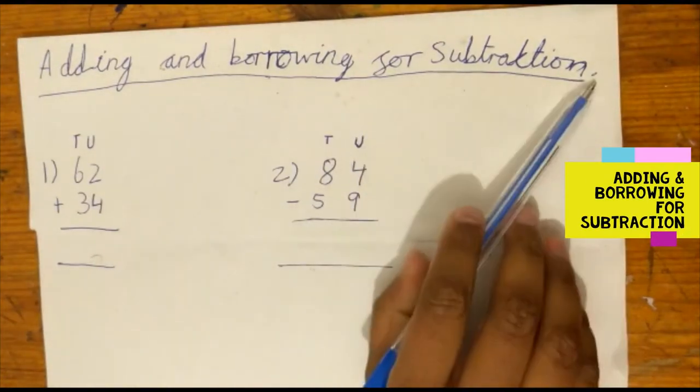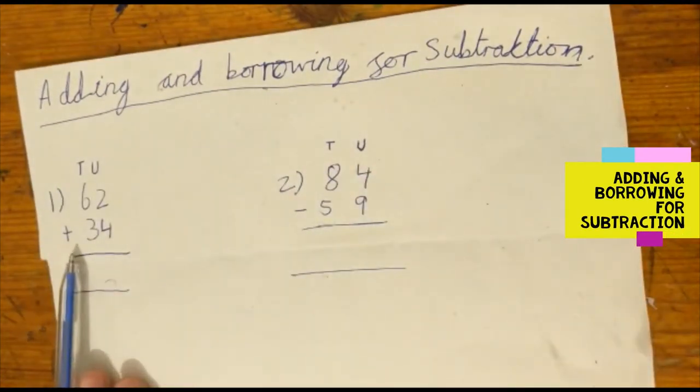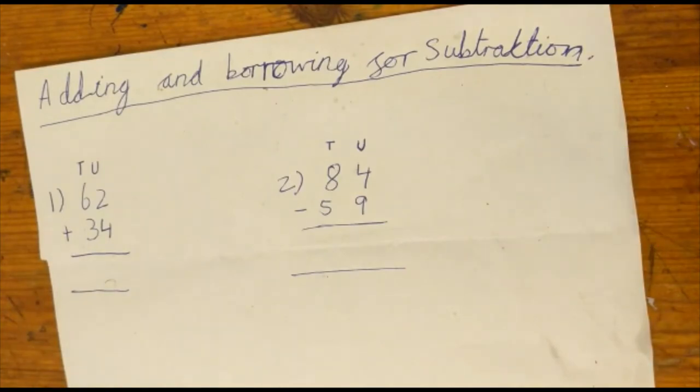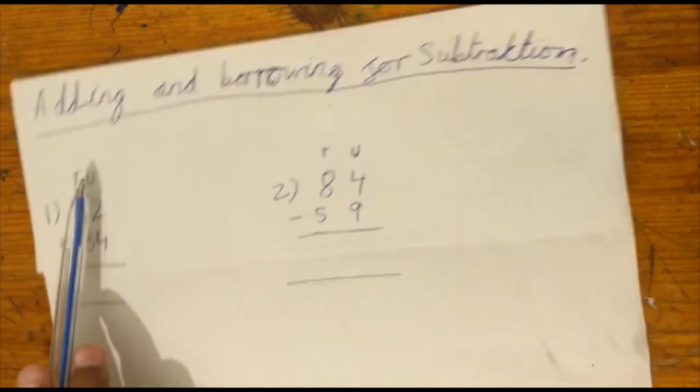Adding and borrowing for subtraction. So our first question is 62 plus 34. We are going to start with the units.